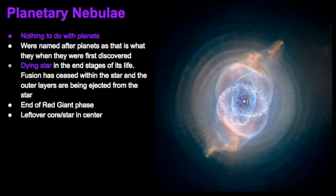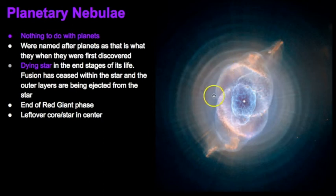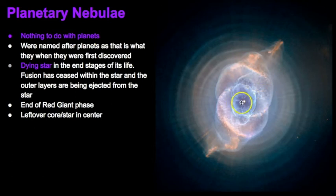All that remains is a little white dwarf star — the hot leftover core of a main sequence star. The outer layers are gases being blown off the star, creating beautiful shapes. This happens at the end of the red giant phase, leaving just the white dwarf in the center.